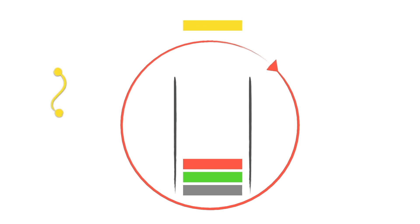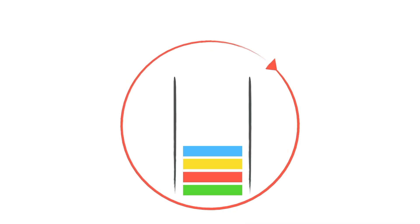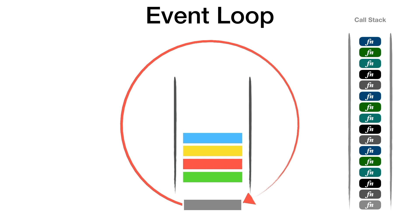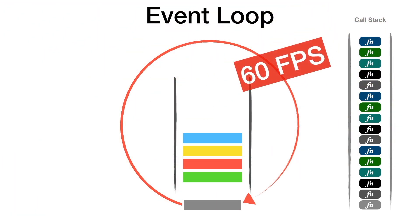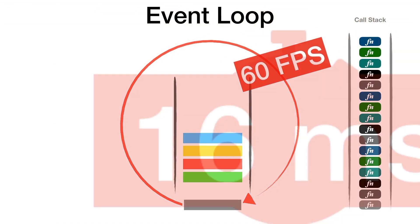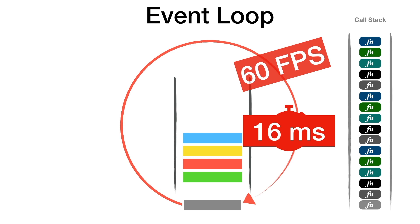We will see how it guarantees the order of execution through a data structure called the message queue. We will see how the messages are processed and what it means to really handle a message. You can get the best performance out of a UI only when the event loop executes at 60 frames per second, and we will see why that is the case.